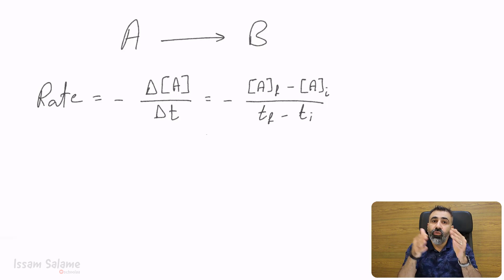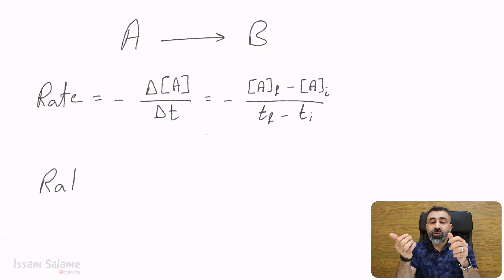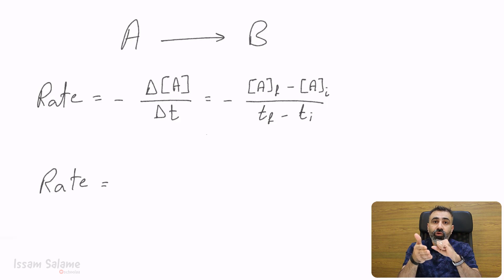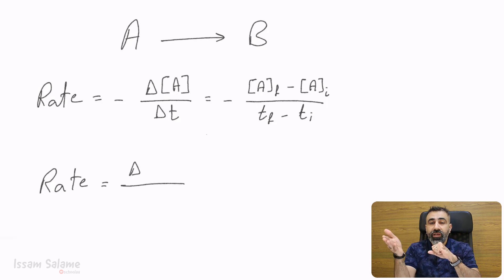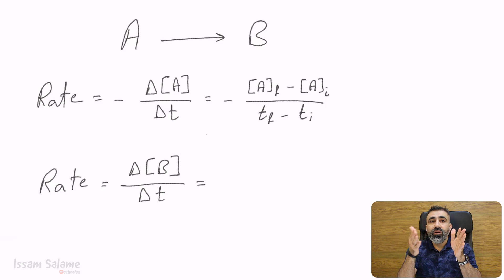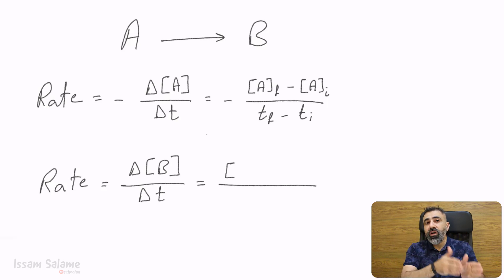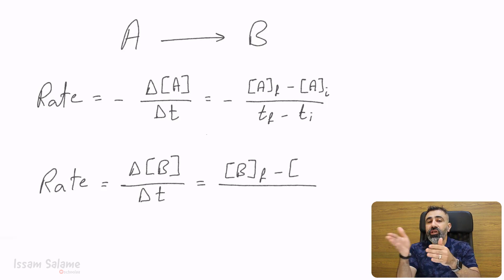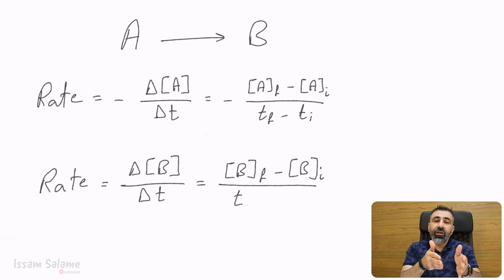But if you want to measure the rate from the products, then it's going to be as follows. Rate is going to be equal to delta concentration of B over delta T, which means concentration of B final minus concentration of B initial divided by T final minus T initial.